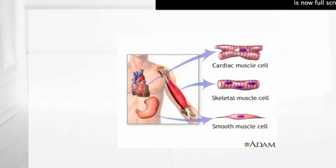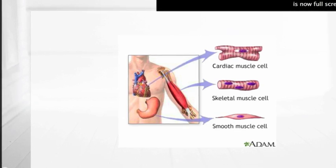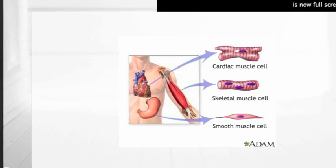Although the heart is controlled by the autonomic nervous system, it can still function without it due to the pacemaker cells. These cells can still contract because their cell membrane allows potassium and sodium to pass through, which causes one cell to contract and trigger the rest of the pacemaker cells to set off. This is why the cardiac muscle cell is specialized.